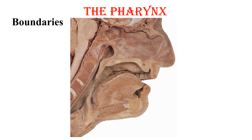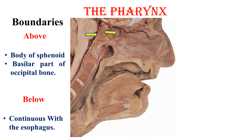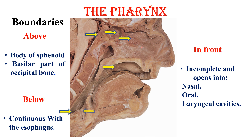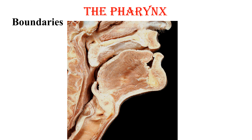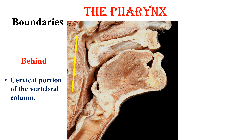As for the boundaries of the pharynx, as can be seen in that cadaveric specimen, above you can see the body of the sphenoid and the basilar part of the occipital bone. Below, it is continuous with the esophagus. In front, it is incomplete and opens into the nasal cavity, the oral cavity, and the laryngeal cavity. Behind, there is the cervical portion of the vertebral column.